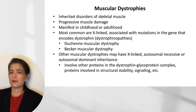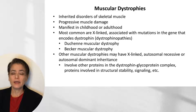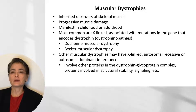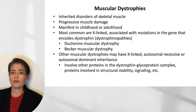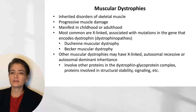Muscular dystrophies are inherited disorders of skeletal muscle characterized by progressive muscle damage. Although we typically think of them as diseases that present in childhood, they may actually present as late as adulthood in the 60s. The most common are the X-linked muscular dystrophies associated with mutations in the gene encoding dystrophin, including Duchenne and Becker muscular dystrophy. There is also a wide range of other muscular dystrophies showing a variety of inheritance patterns due to other proteins in the dystrophin glycoprotein complex, as well as proteins involved in structural stability and signaling.